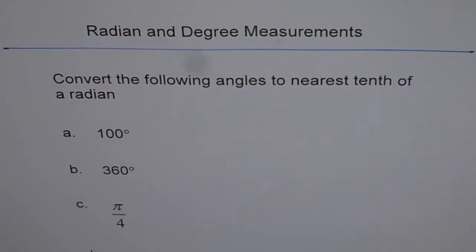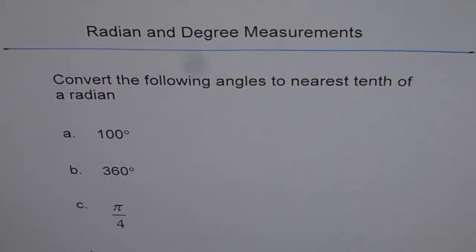Radian and degree measurement test paper. So this is another question which says convert the following angles to nearest tenth of a radian: 100 degrees, 360 degrees, pi by 4, and pi by 6. Now convert them and then look into my solution.